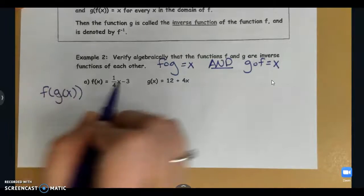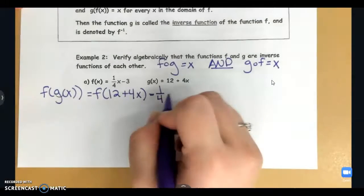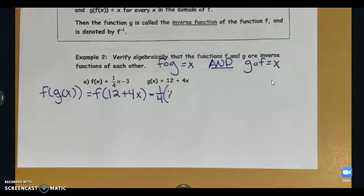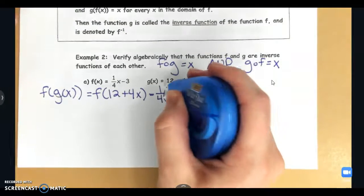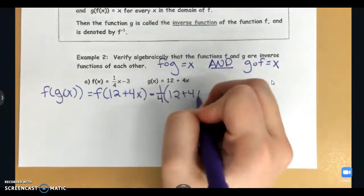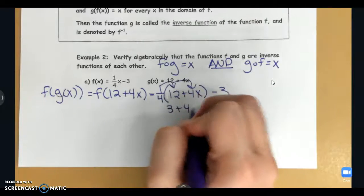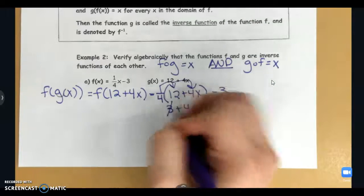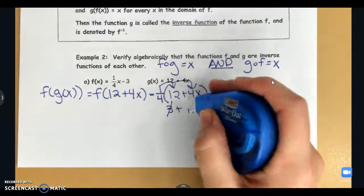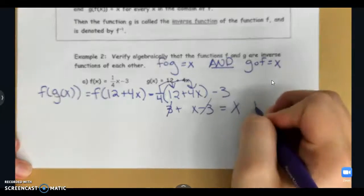Remember that just means I'm substituting g into my function f. So 1 fourth, we're plugging in g here, so 12 plus 4x minus 3. I distribute that 1 fourth and we get 3 plus x minus 3. The 3 and negative 3 cancel. 1 fourth times 4 is just 1, so that's 1x. And we're left with x. So that one checks out.